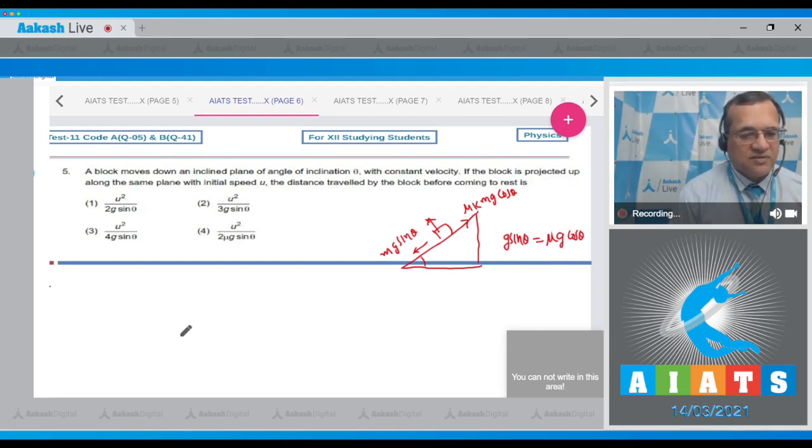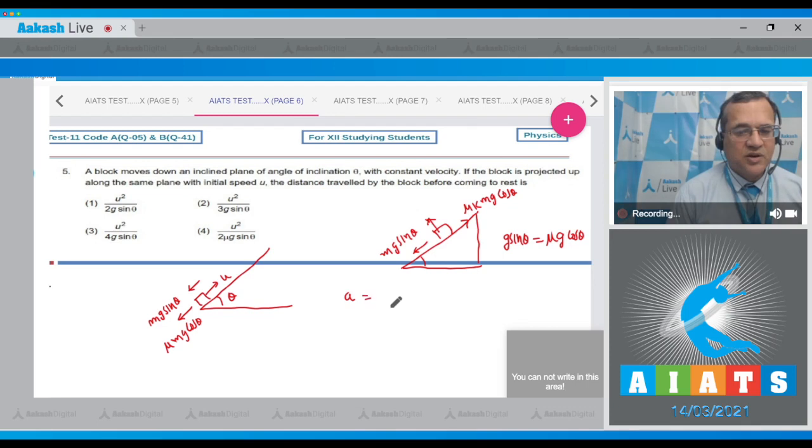It says if this body is projected up with speed u on the same inclined plane, on this rough inclined plane with initial speed u, then the weight component which is equal to m*g*sin(theta) and the friction mu*m*g*cos(theta) will act downward. Due to this, the retardation will be equal to g*sin(theta) plus mu*g*cos(theta).